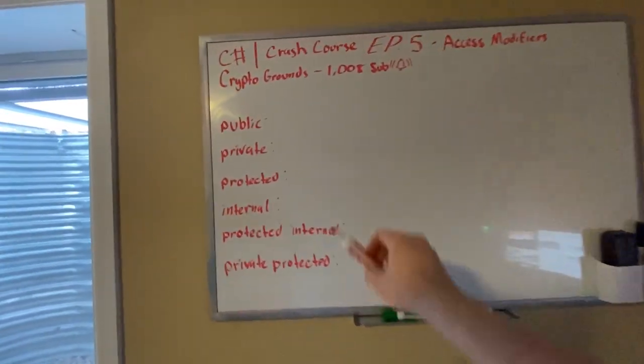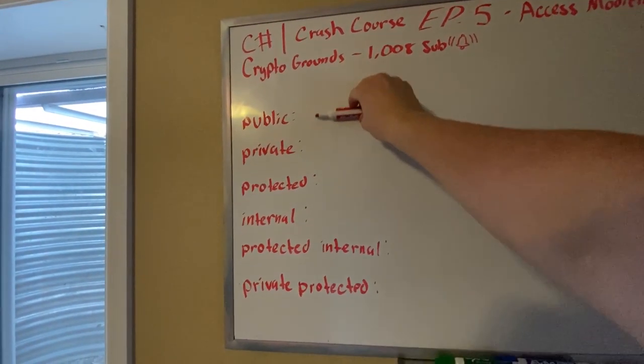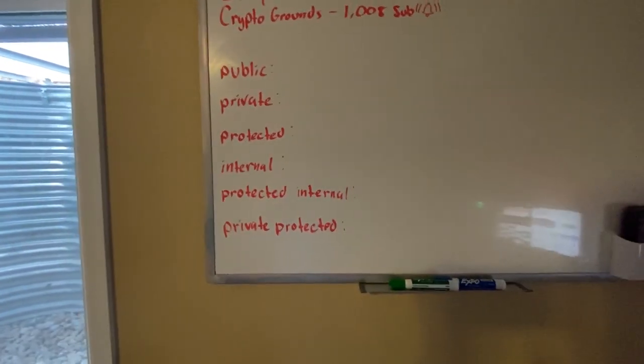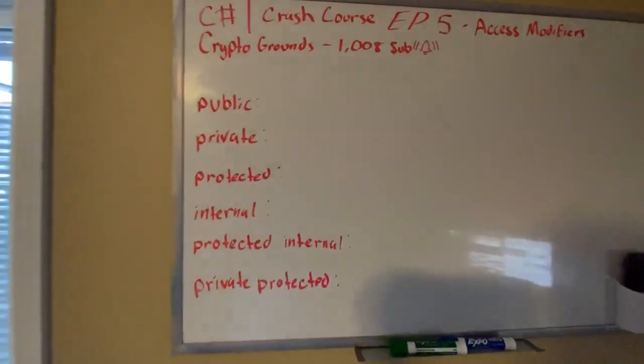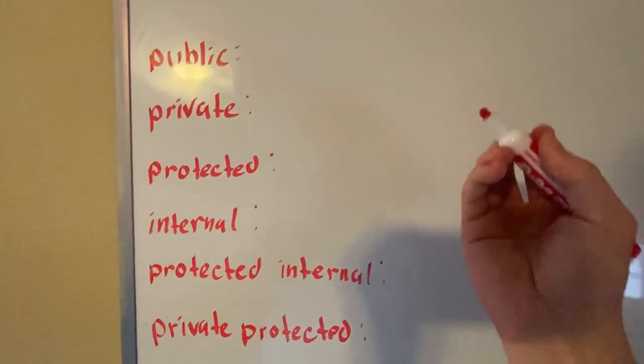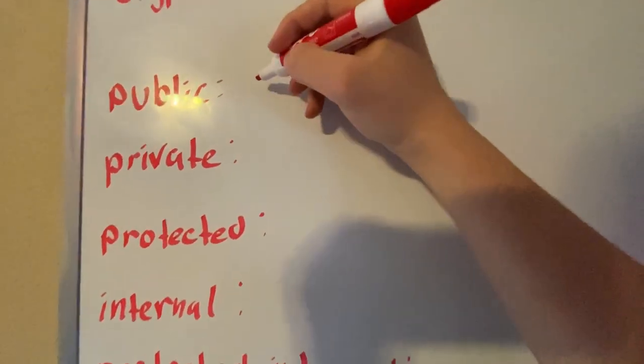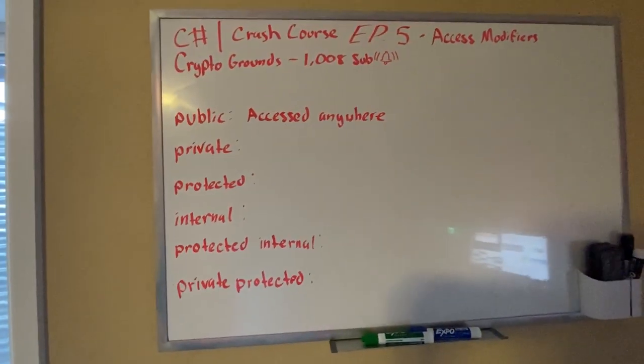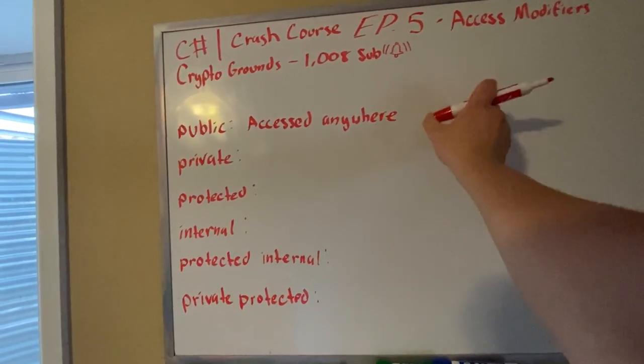The most familiar ones you've probably ever seen if you've coded before is public and private, as I've used those in past videos. Let me explain each of them because they actually go in depth. Public is pretty easy. This one can literally be accessed anywhere. It can be accessed even outside of your own project.